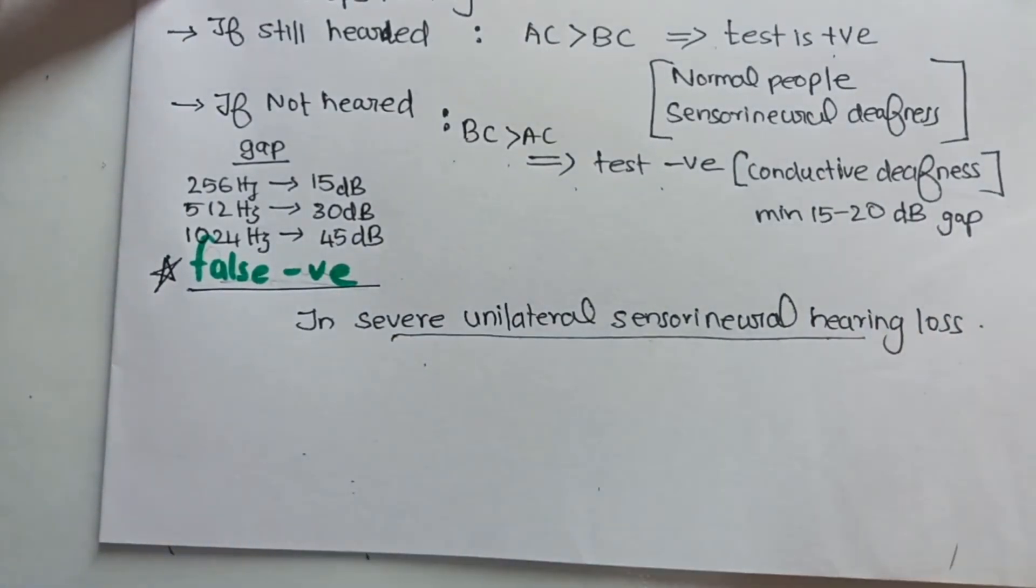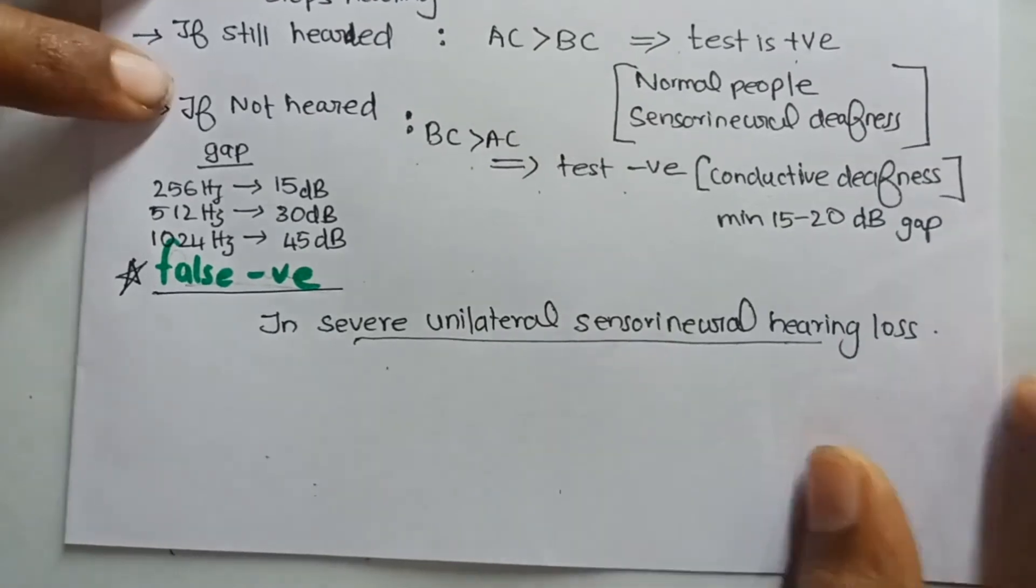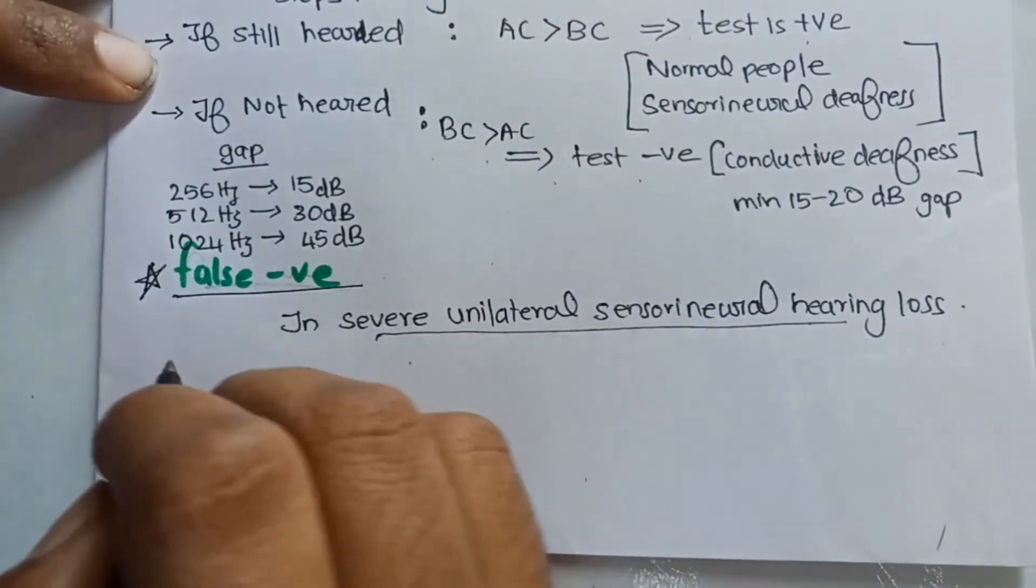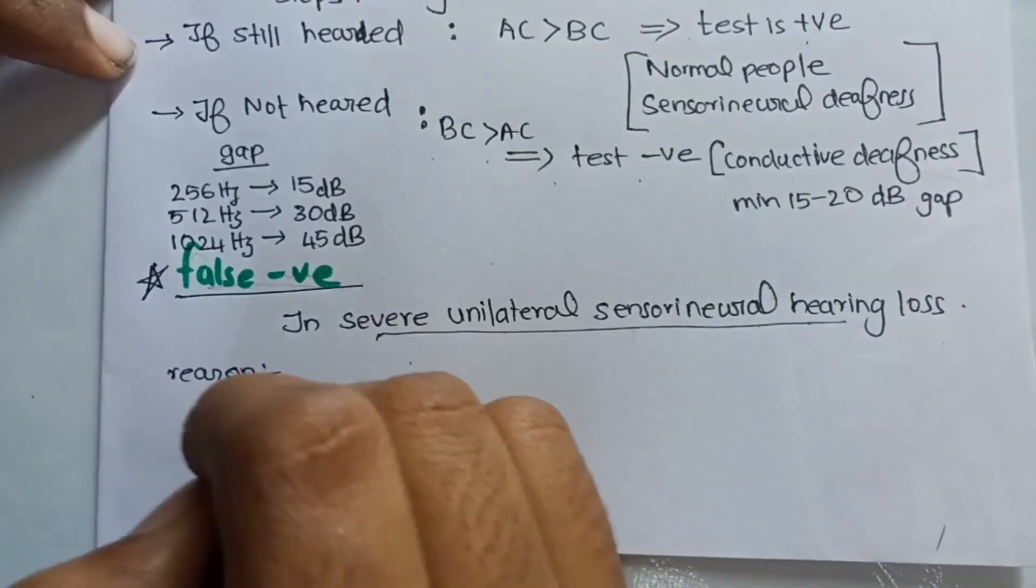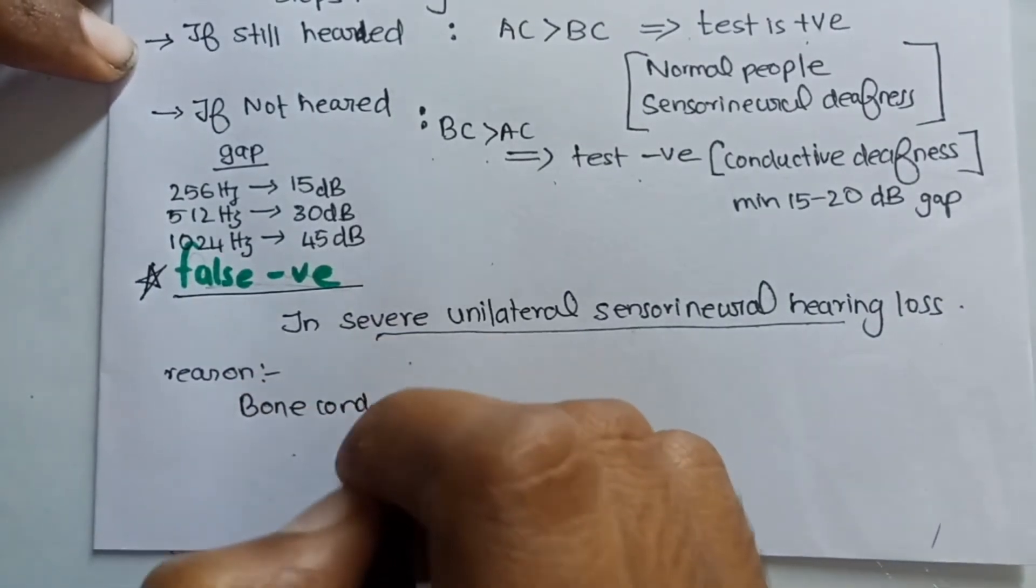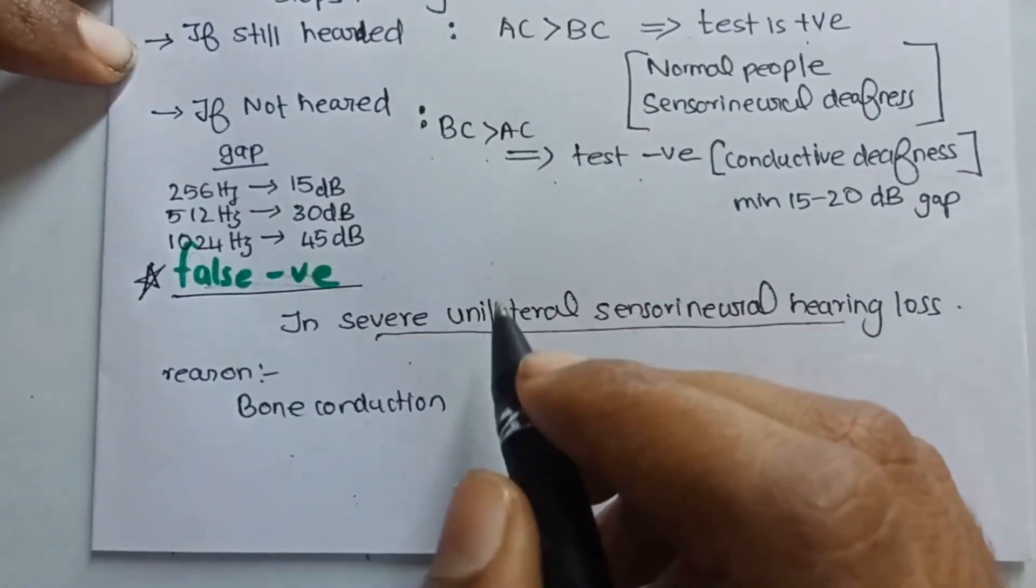Generally negative Rinne's test is seen in conductive deafness, but a false case is seen in severe unilateral sensorineural hearing loss. So why is this?